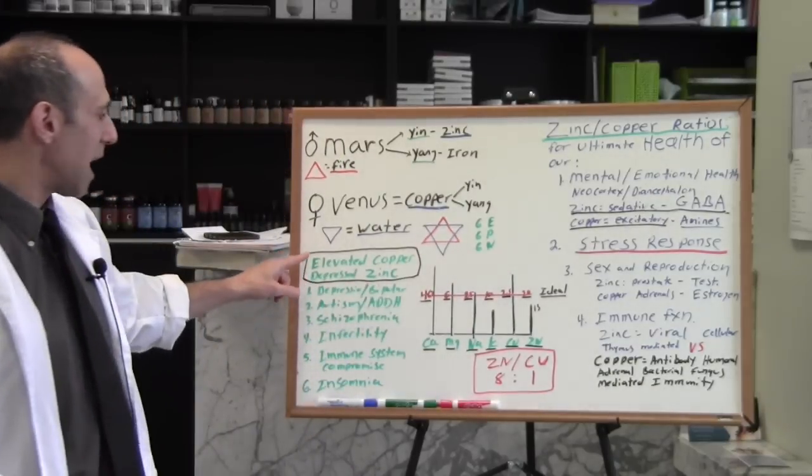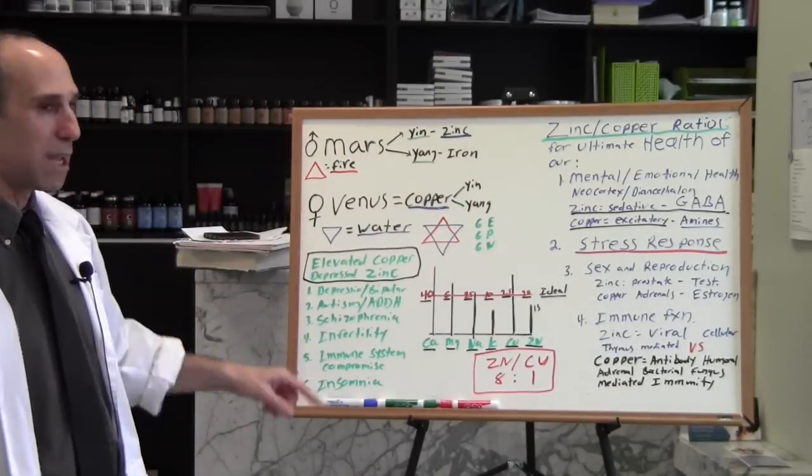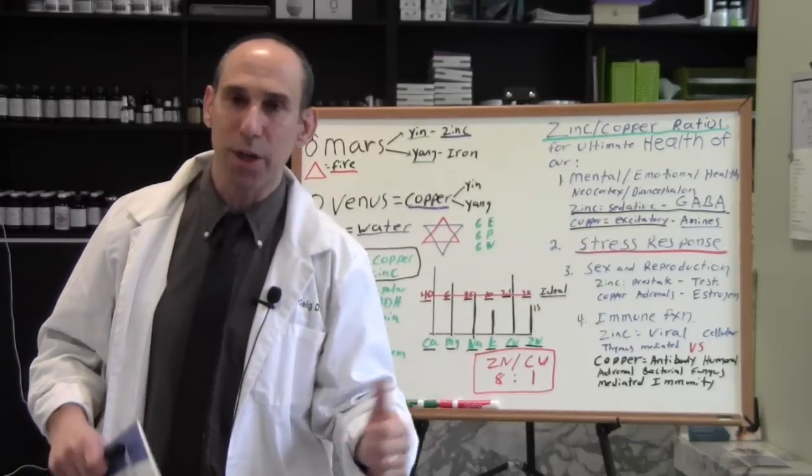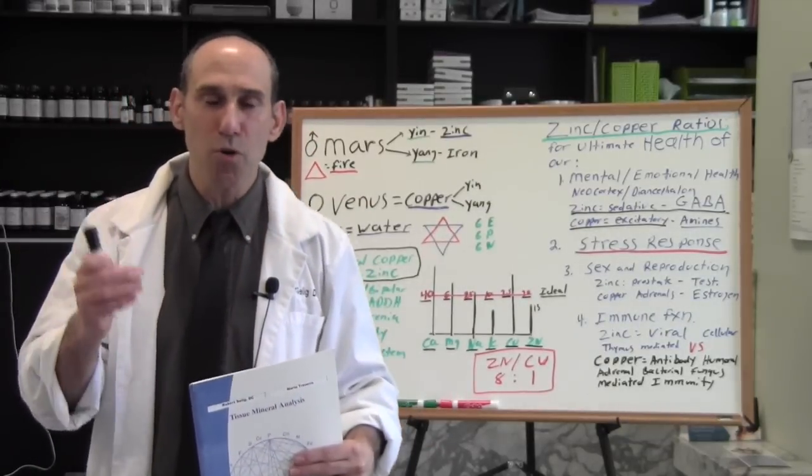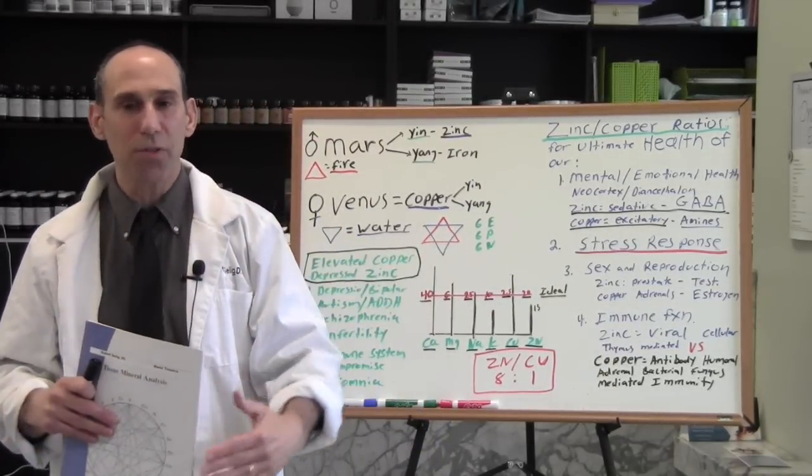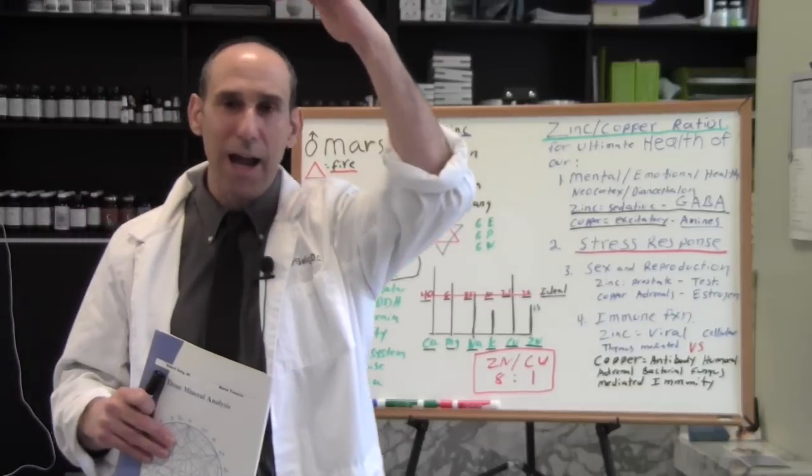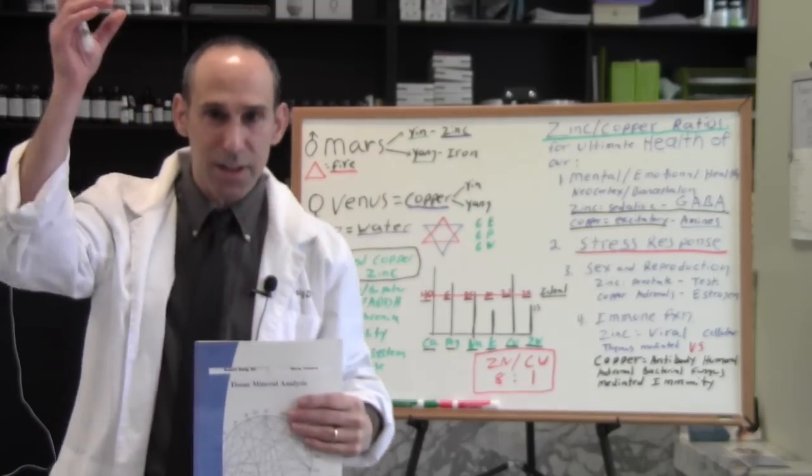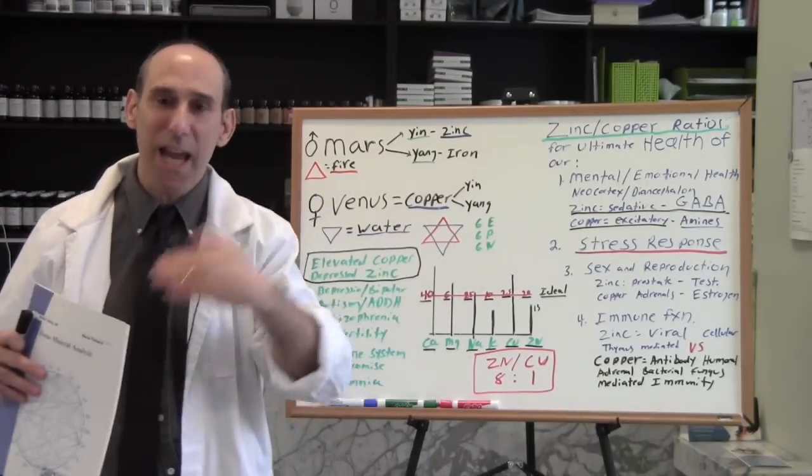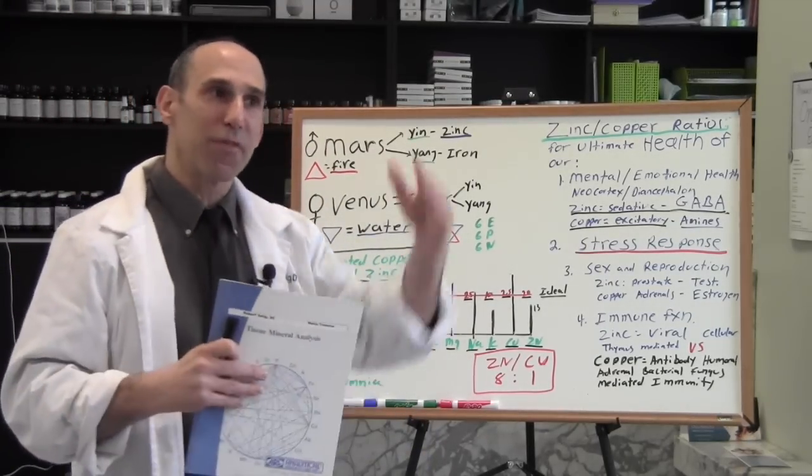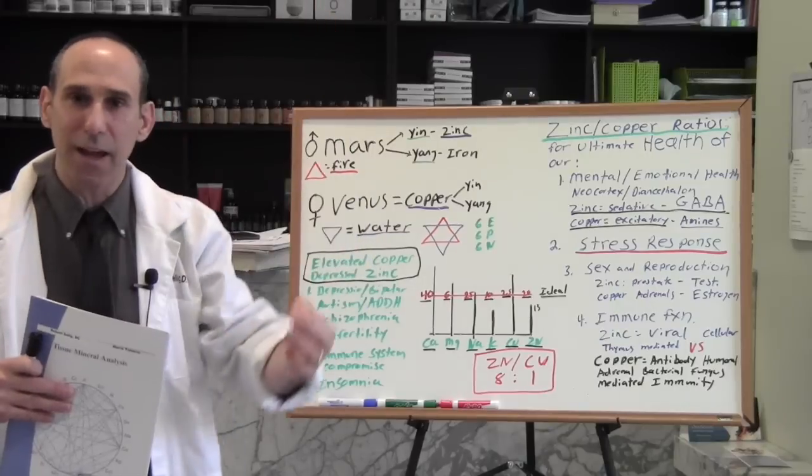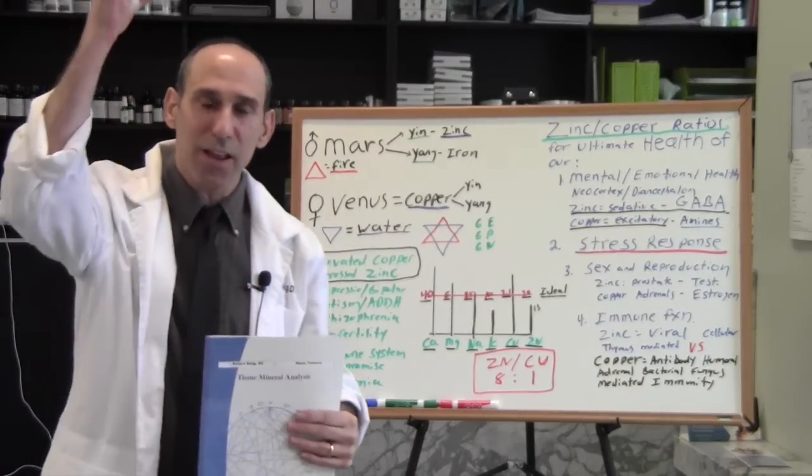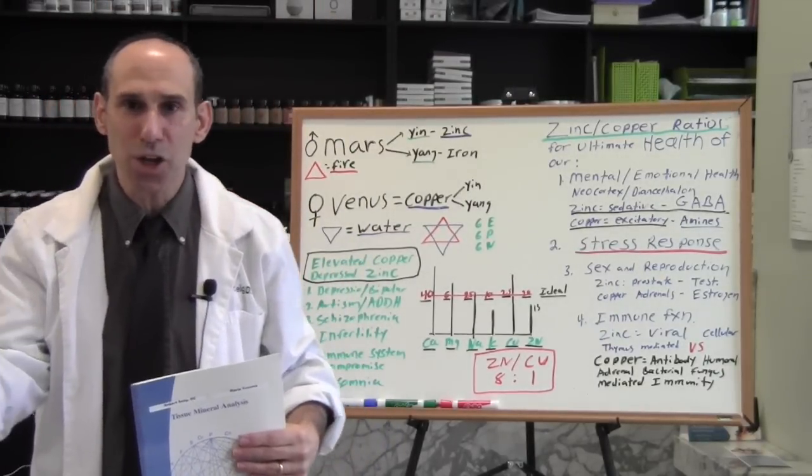And so when the zinc is low and the copper is high, usually this elevated copper depresses zinc, that is your depression. Very common in postpartum depression. When a woman's giving birth, you're going to see that very high elevated copper levels. And that's part of why she can give birth. But when the copper doesn't come back to healthy ranges, that elevated copper is her postpartum depression.